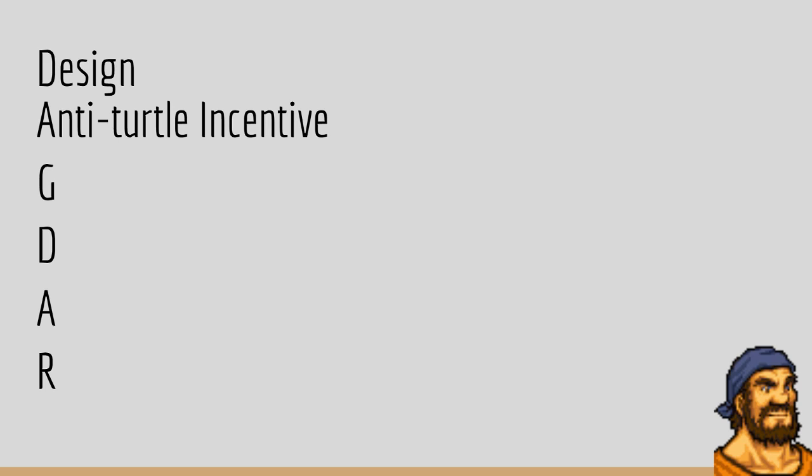So anti-turtle incentives are about: how do I get the player out of their shell and give them a reason to actually go fast? A lot of maps that tend to have flow problems have issues where there's nothing driving the player forward at a pace that creates quick and engaging gameplay. If there's no reason to move quickly, there's nothing stopping the player from taking it slow, beating enemies one by one, and getting the same rewards as someone who played fast and took risks.